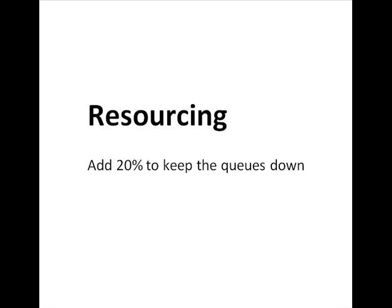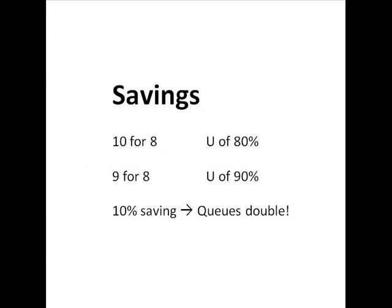The other reason why this theory is really practical and important is: what if you're tempted to make some savings? If you've got 10 people providing a service that you only really need 8 people for, so you've got your queues down to 4, and somebody leaves and you think you're not going to replace them — you'll run it with only 9 people instead of 10. Well, your utilization now, instead of 8 over 10, is 8 over 9, so you're up to about 90% utilization. What happens is the queues go from 4 to 10, because you've skimped on replacing that extra person.